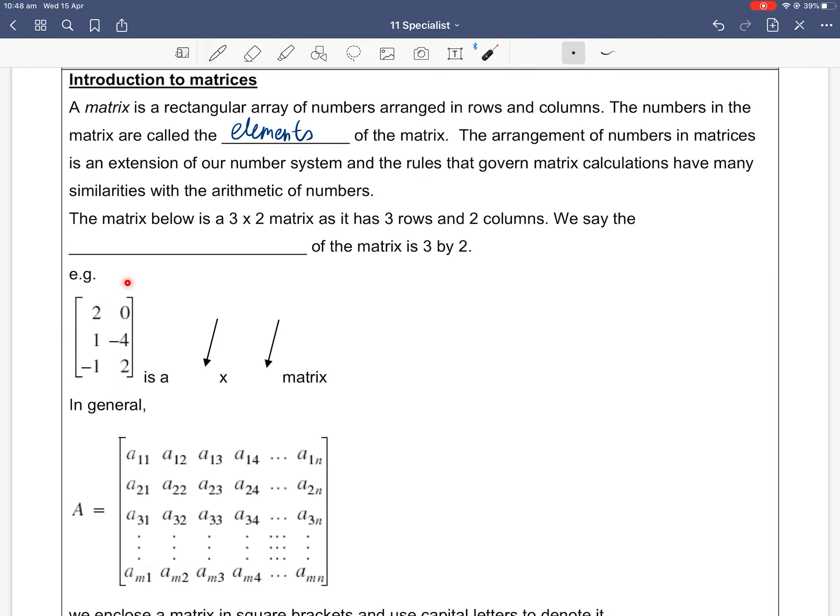The matrix below is a 3 by 2 matrix. 3 because it has 3 rows—one row, two row, three rows. And 2 because it has 2 columns—one column, two columns. Rows go across, columns go down. Don't get yourself confused. We say that the dimension, or sometimes we call it the size, and some textbooks even call it the order of the matrix, is 3 by 2. Again, 3 because it's rows, 2 because it's columns. You always talk about the dimension with rows by columns. This is a 3 rows by 2 columns matrix. Rows by columns, across by down.